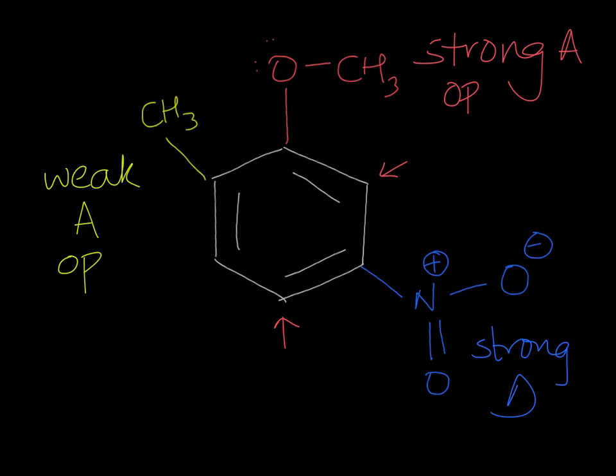Your weak activator in yellow has this ortho position right here and the para position, and the other ortho positions are already blocked. And your strong deactivator, like you might have heard, is a meta director and the meta position relative to that, the only one that's open is right here. But now you see that different groups that are on the benzene ring seem to indicate different positions for the incoming group. But who gets to decide?